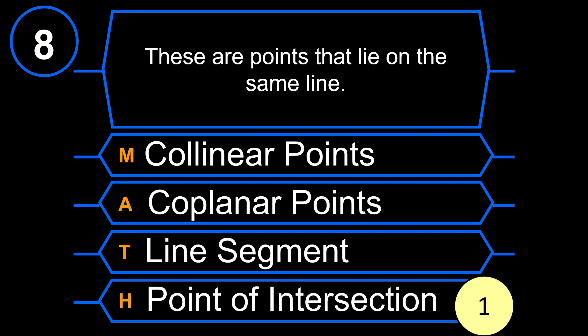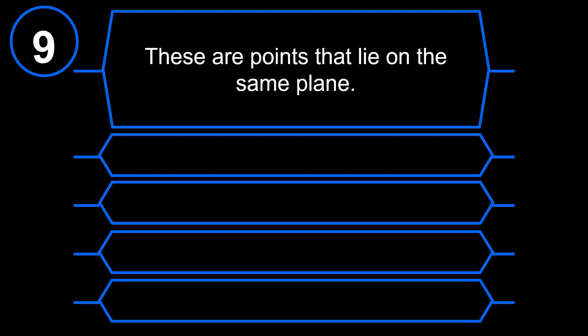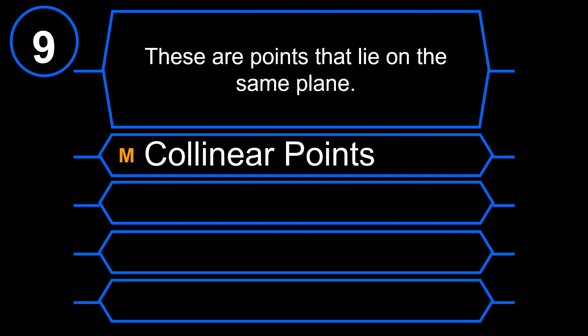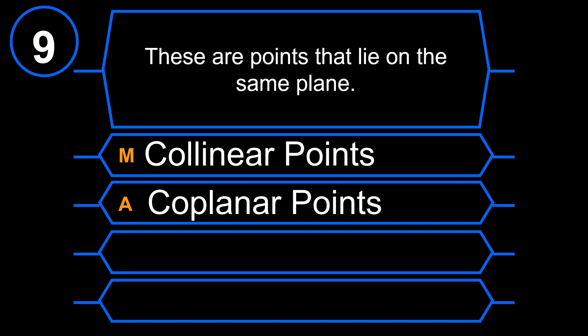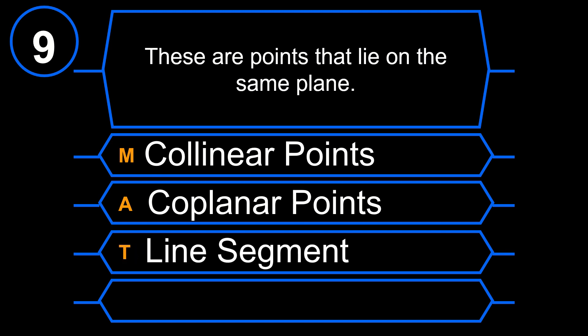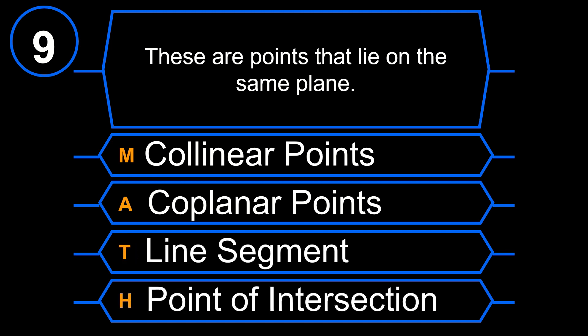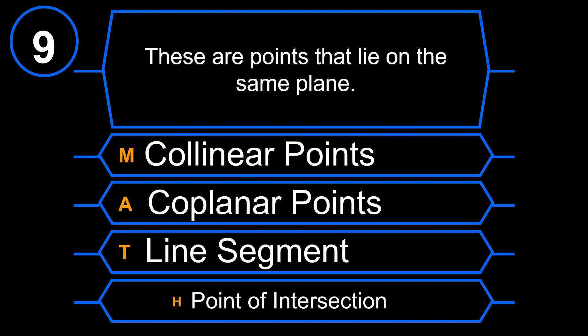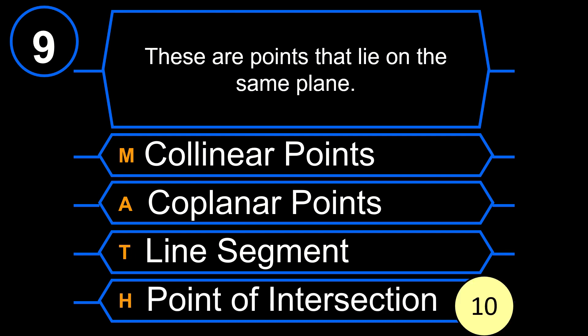And we are almost done. Question number 9: These are points that lie on the same plane. M. Collinear Points. A. Coplanar Points. T. Line Segment. H. Point of Intersection.